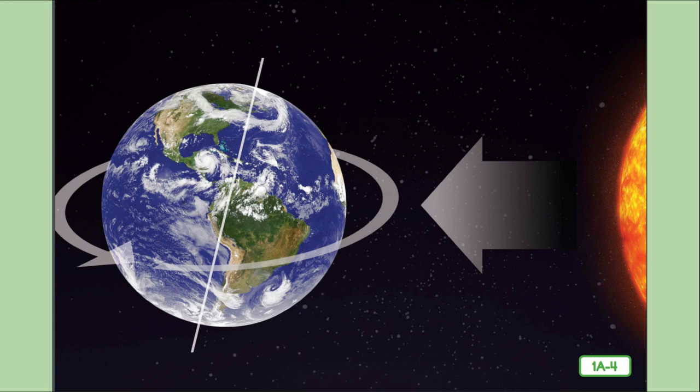Rotation takes us from daytime to nighttime and back to the very beginning of daytime again before the cycle starts over. As Earth rotates, light from the sun falls on one half of the Earth — we call this daytime. The other half of Earth is in darkness and we call this nighttime. As Earth continues to rotate, the part of Earth that has sunlight moves into darkness and the part that had darkness moves into the sunlight. This is a never-ending cycle of daytime and nighttime.